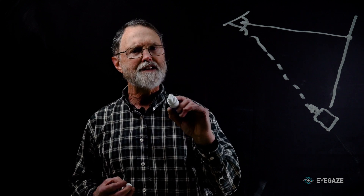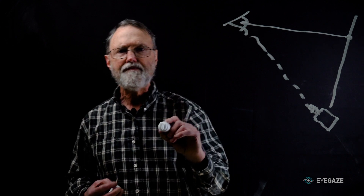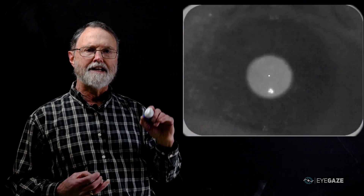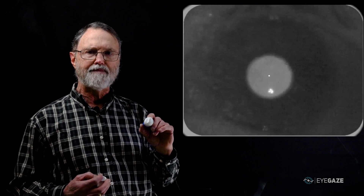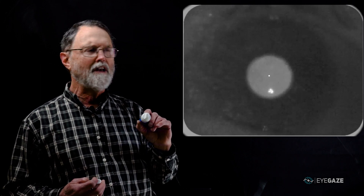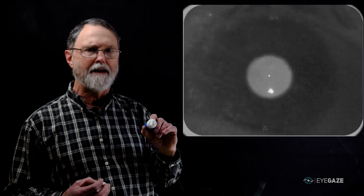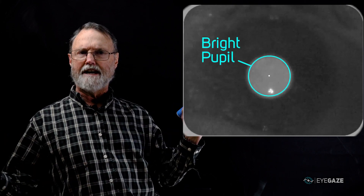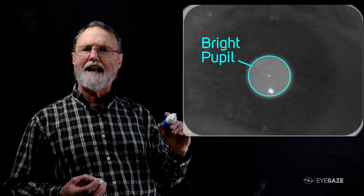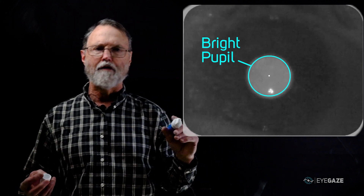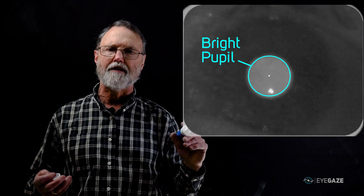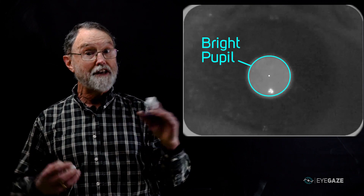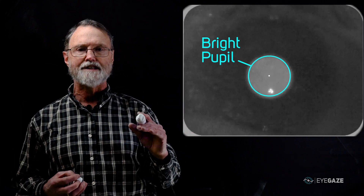So what does the camera see? Here's a picture of an eye as seen by our camera. Note that there are several interesting features of the eye image. First, the pupil looks bright — it's not the black pupil that you and I normally see when we look at each other. This is called the bright pupil effect, which is the deer-in-the-headlights look.